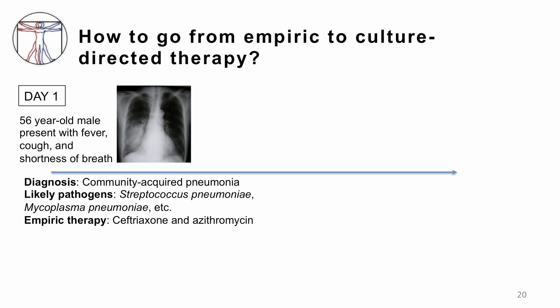Let's finish with an example of how you go from empiric to culture-directed therapy. A 56-year-old man presents with fever, cough, and shortness of breath. On the chest X-ray, there's a large area of whiteness — a consolidation, an area of opacity suggestive of pneumonia. You think the patient has community-acquired pneumonia and ask: what bacteria cause community-acquired pneumonia? Streptococcus pneumoniae is an important one, Mycoplasma pneumoniae is another. So you pick an empiric antibiotic regimen effective against Streptococcus pneumoniae, which would be ceftriaxone, and also an antibiotic active against Mycoplasma pneumoniae, which is azithromycin. That's how you've picked an empiric antibiotic regimen.